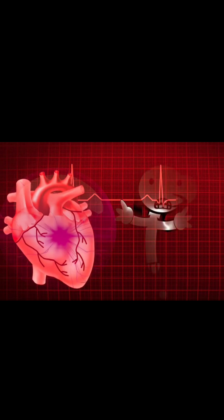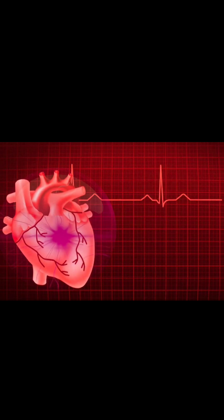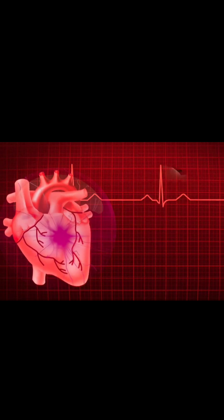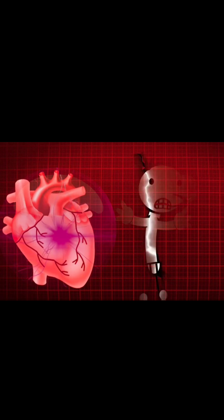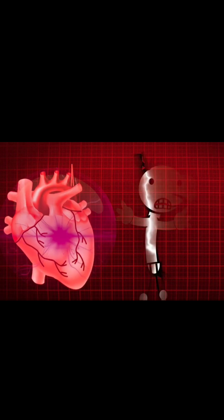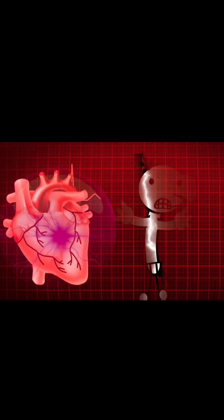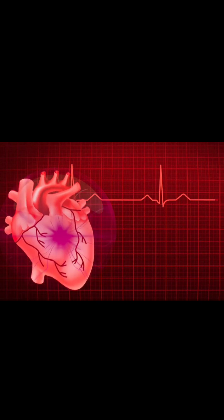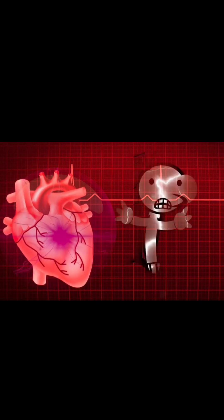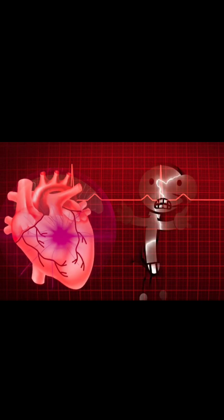Right coronary artery, RCA. Origin: from the ascending aorta, right aortic sinus. Major branches: right marginal artery, which supplies the right ventricle; and the posterior interventricular artery, PDA, which supplies the posterior one-third of the interventricular septum.